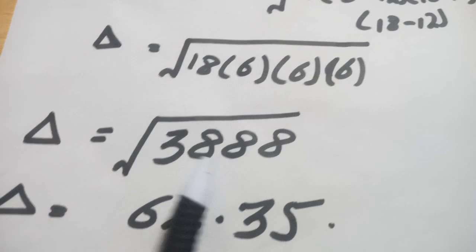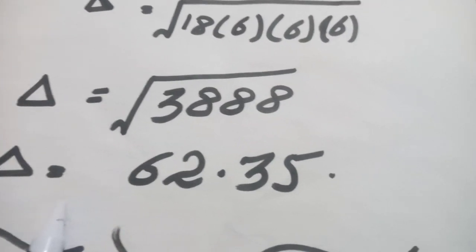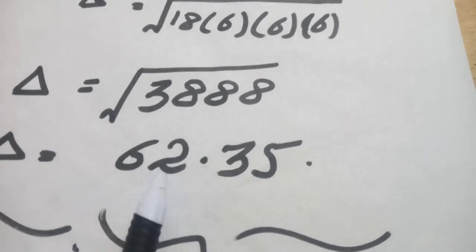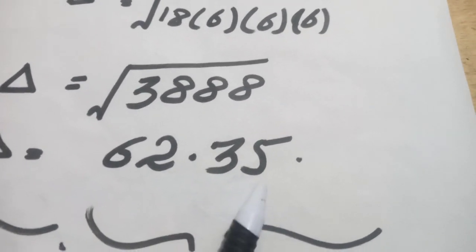When we take its square root, at the end we get area of an equilateral triangle as 62.35.